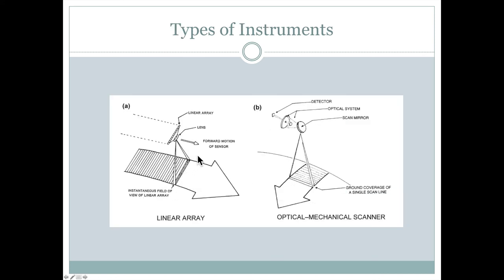So in this example here from the textbook, we can see that here's a linear array right here coming along in this direction here. And that entire stippled area there is being captured all at once as the satellite is passing overhead here. And in this example here, once again, the mirror is moving from side to side.